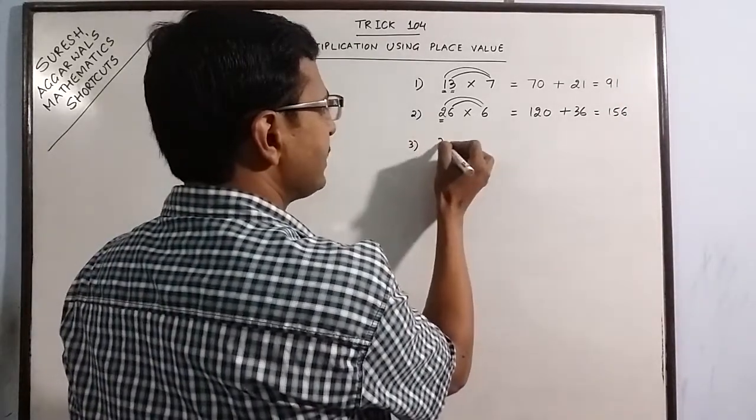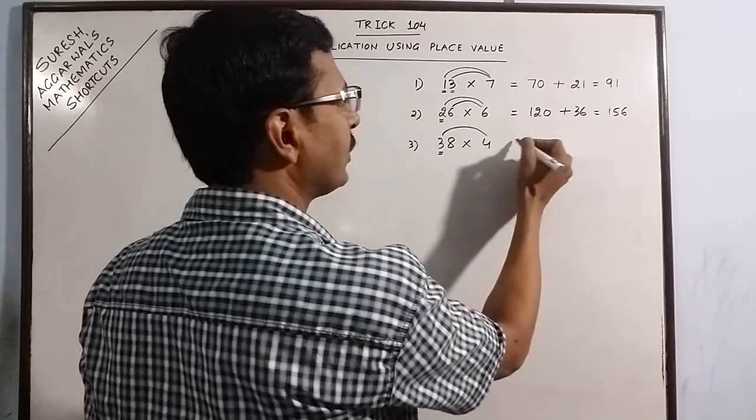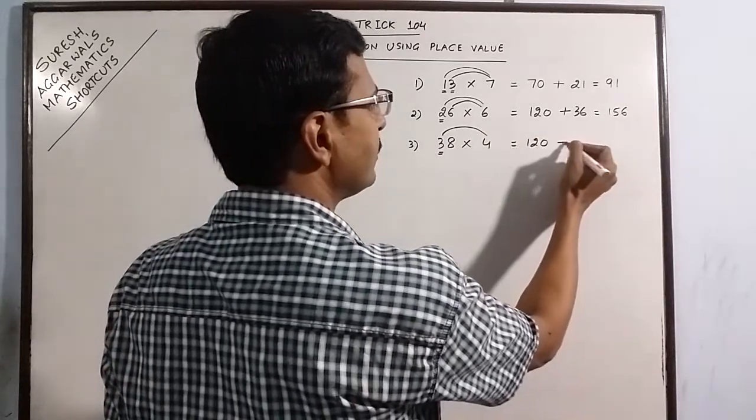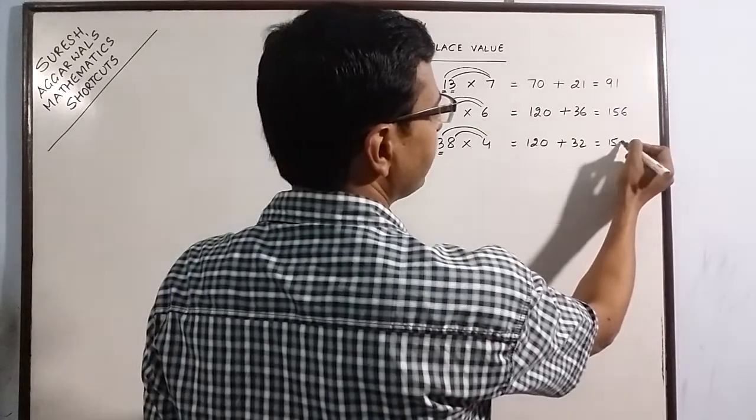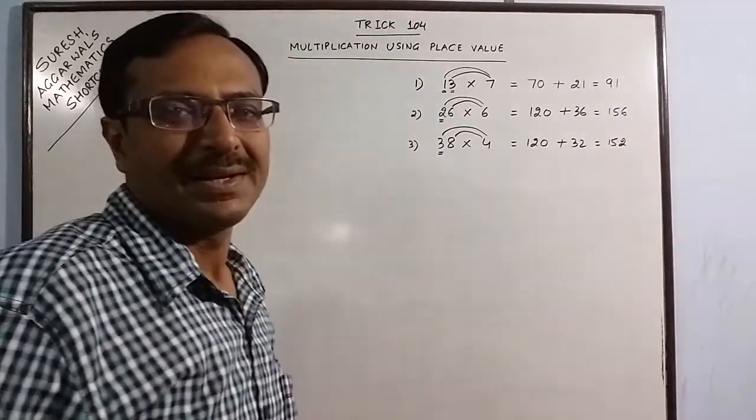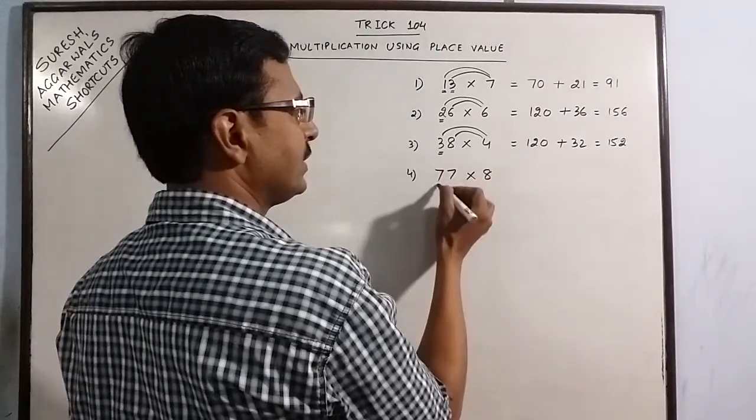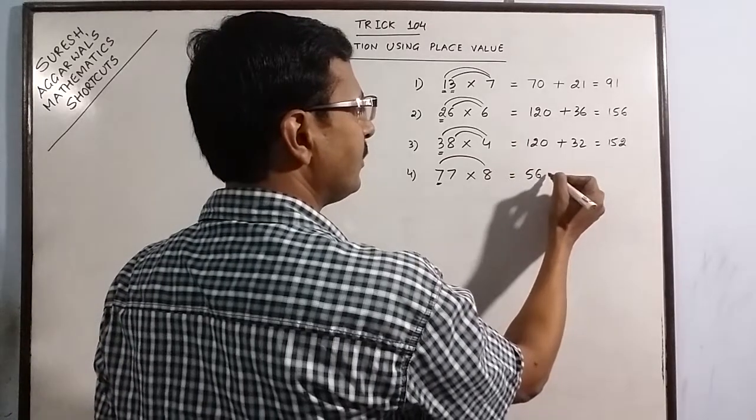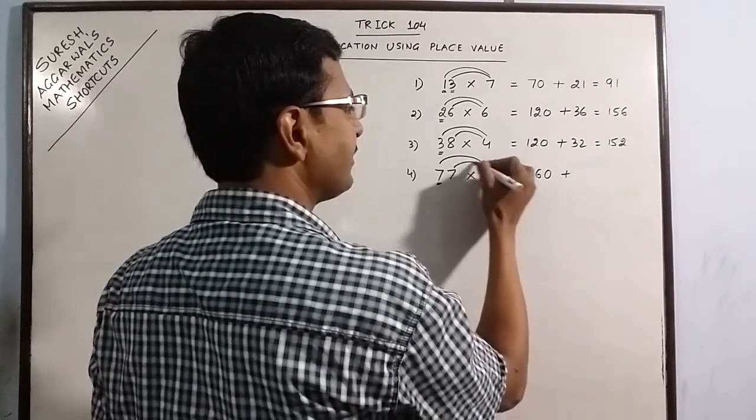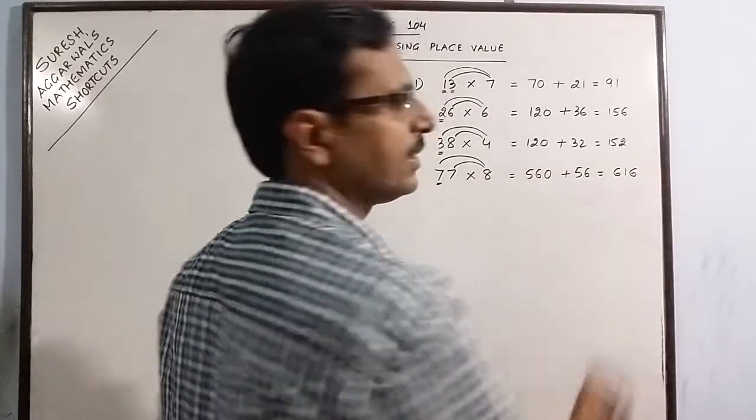Similarly, more examples. See 38 into 4, 3 into 4 is 12, put 1 zero, 8 into 4 is 32. So the answer is 152. Take larger numbers, say you have 77 into 8. 7 into 8 is 56, put 1 zero. 7 into 8 is 56, 616 is the product.